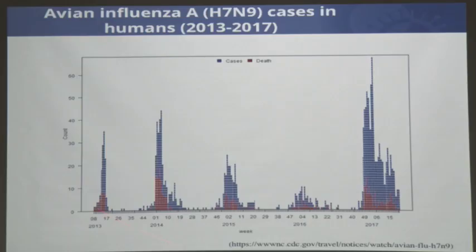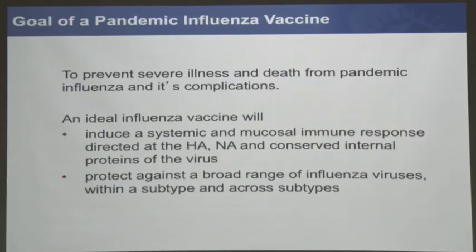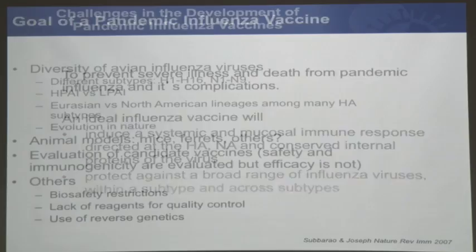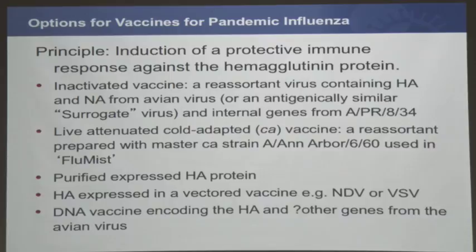Looking at the H7N9 epidemic curve — case counts on the y-axis and time since the first appearance in 2013 to 2017, with blue for cases and red for deaths — in 2017 the fifth wave was bigger than all the previous four years combined. We see this virus coming back each year in larger and larger numbers, so far limited to China. The goal of a pandemic influenza vaccine would be to protect against these strains, but there's a huge diversity in nature.